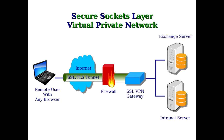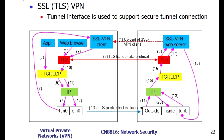Number 4: Secure Sockets Layer, SSL, and Transport Layer Security, TLS. SSL and TLS create a VPN connection where the web browser acts as the client and user access is restricted to specific applications instead of the entire network. SSL and TLS are most commonly used by online shopping websites and service providers. Web browsers switch to SSL with almost no action required from the user, since web browsers come integrated with SSL and TLS. SSL connections have HTTPS in the beginning of the URL instead of HTTP.